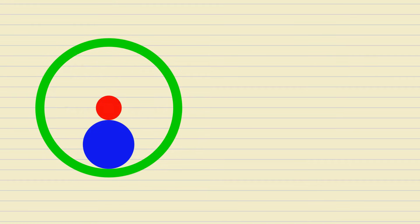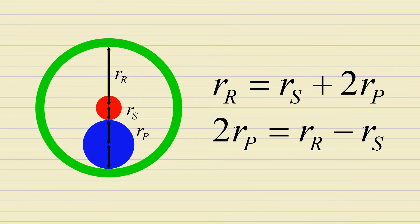From this diagram, it is clear that the sun, planet and ring gear radii must satisfy the following equation. For reasons soon to be revealed, we will rewrite this equation as follows.